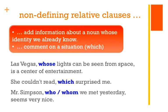The next example: 'Mr. Simpson, who we met yesterday, seems very nice.' Again, we're adding information about a noun whose identity — Mr. Simpson — is already established. The name is here, the identity is here, so we need a non-defining relative clause. 'Mr. Simpson, whom we met yesterday' — who or whom are both correct here, you remember this from part two — 'seems very nice.' The important thing is that non-defining relative clauses are separated from the main clause by a comma. Don't forget that — it's very important.